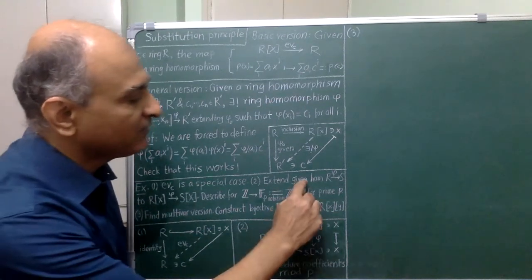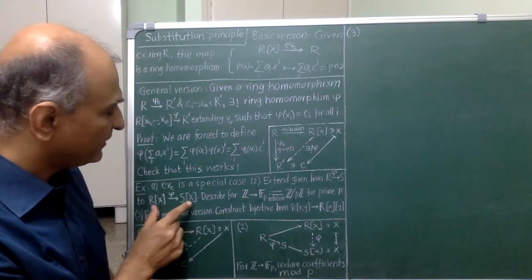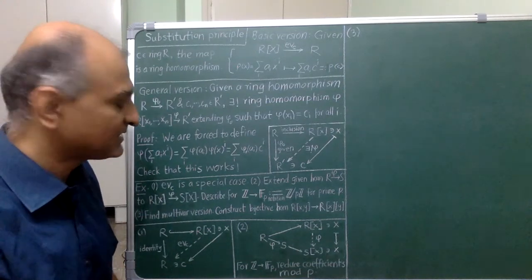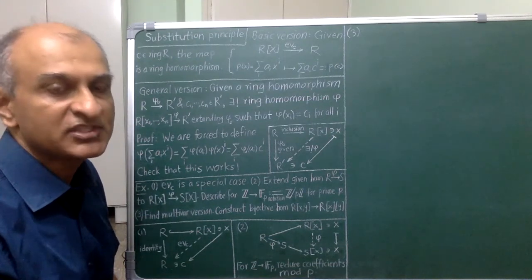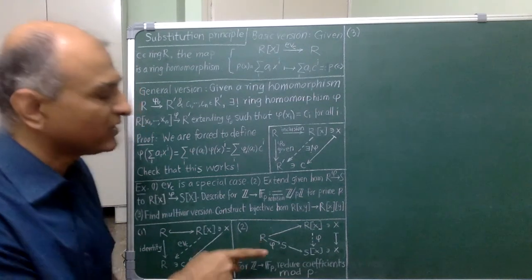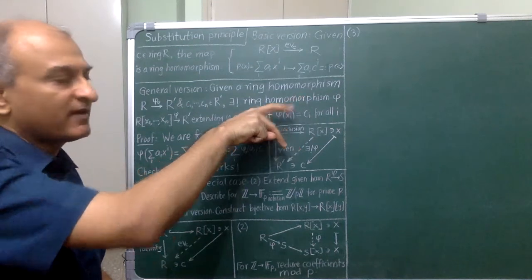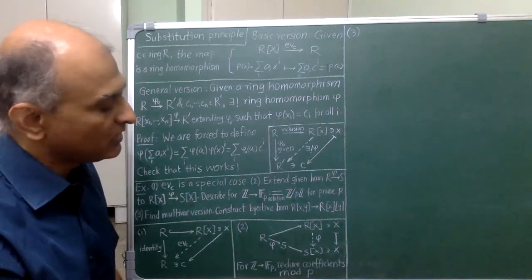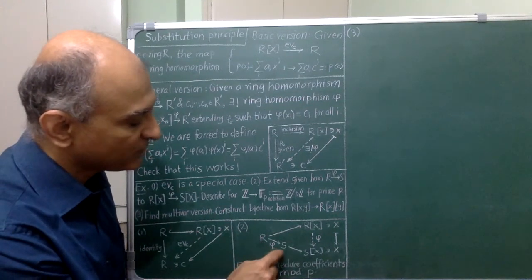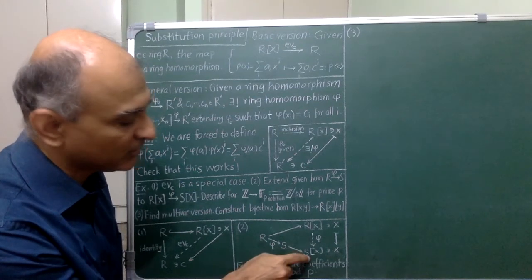In number 2, I am given a ring homomorphism from R to S and asked to extend it between the corresponding polynomial rings. So, of course, the way I do it is by sending x to x. Let us do this precisely. I have drawn a picture here which is a version of the picture drawn over here but obtained by rotating it counterclockwise by 45 degrees. The homomorphism that I am going to extend is a composition. I start with the given homomorphism from R to S and follow it up with the standard inclusion from S to its polynomial ring.